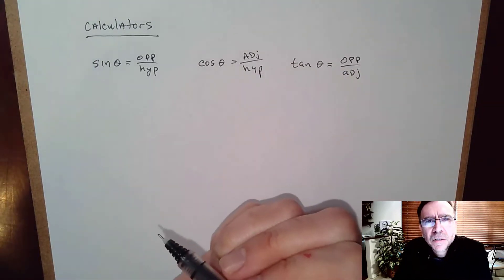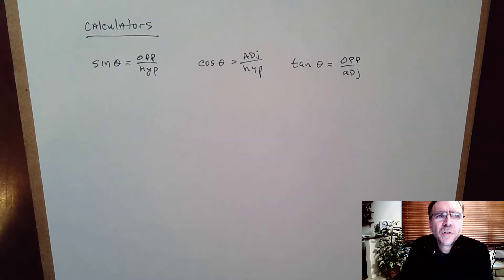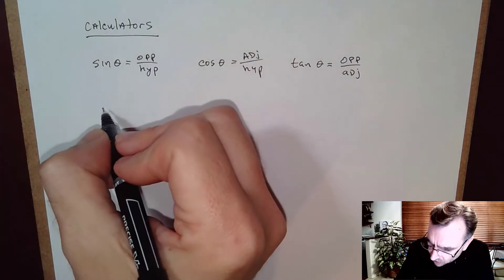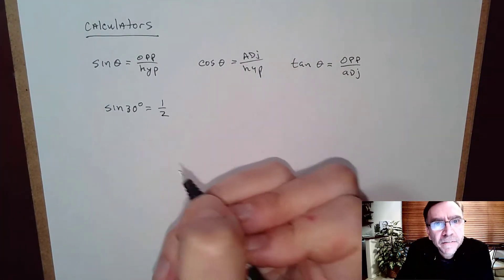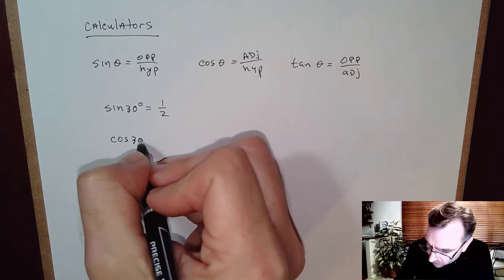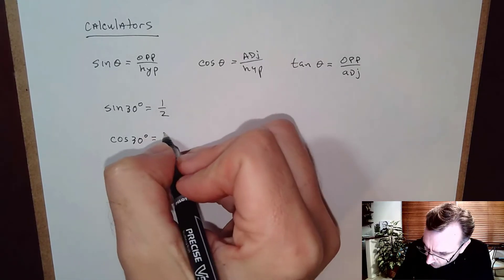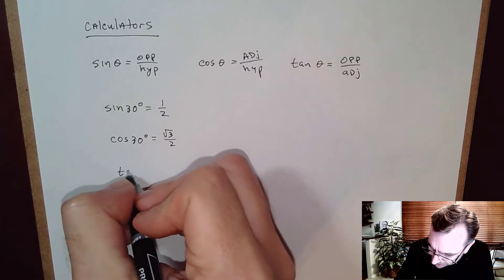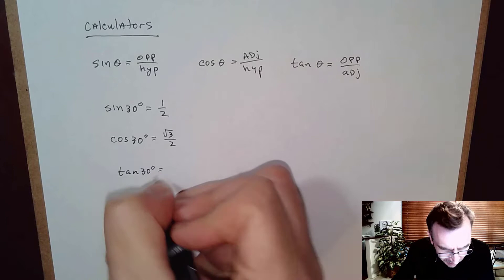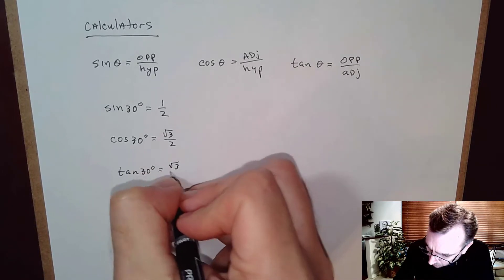We were asked to memorize some trig ratios of special angles. For example, sine of 30° is one half, cosine of 30° was √3/2, and tangent of 30° is √3/3.